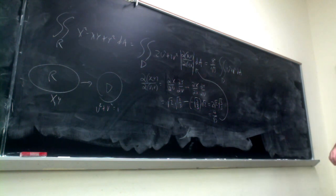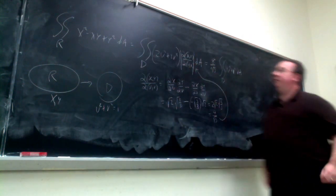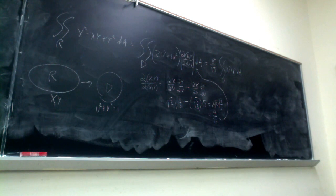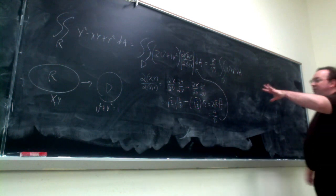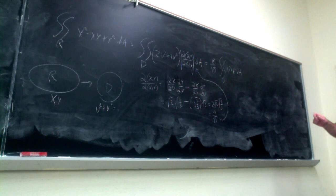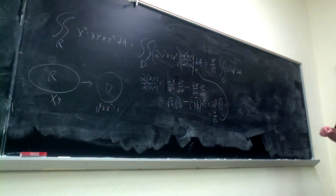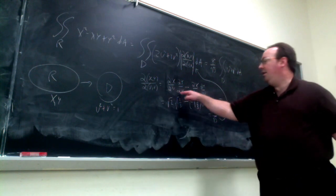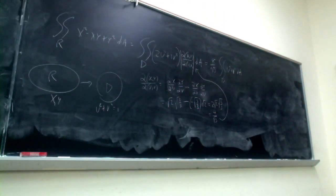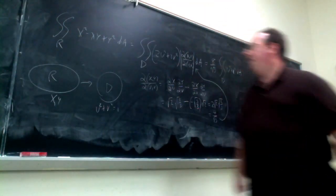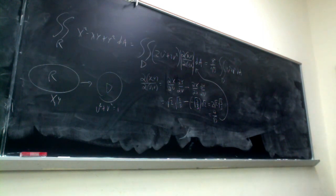Same task every time: figure out your new region, change the integrand by replacing x and y with new variables, and figure out the Jacobian. A student asks how to get ∂x/∂u. Going back to the substitution x = √2·u, you're just differentiating. That's why you need your old variables equal to functions of your new variables — so you can get those partial derivatives.